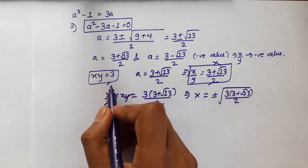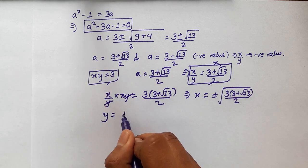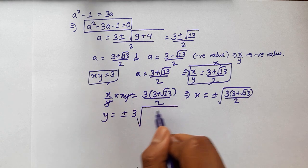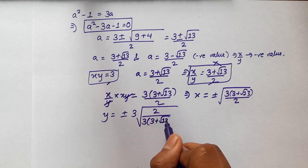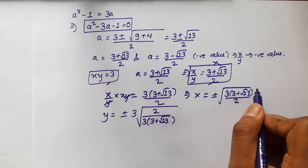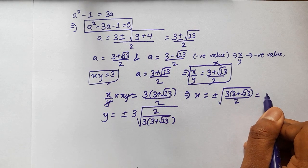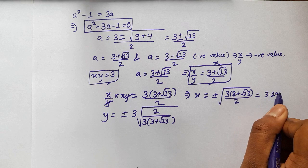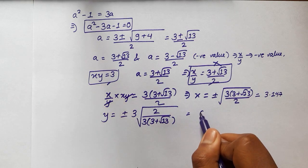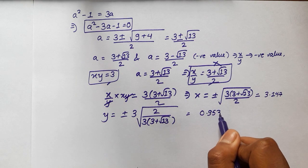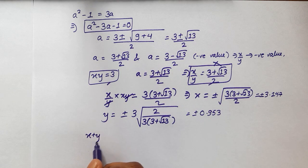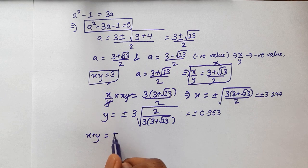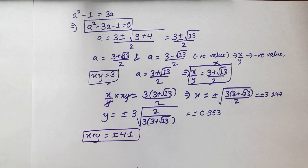Similarly if we place the value of x in this equation we will have y is equal to plus minus 3 under root 2 over 3 plus root 13 as our answer. And this is approximately 3.147 and this is approximately equal to 0.953 plus minus. So now if we add them x plus y we will get a value plus minus 4.1. And that's our answer.